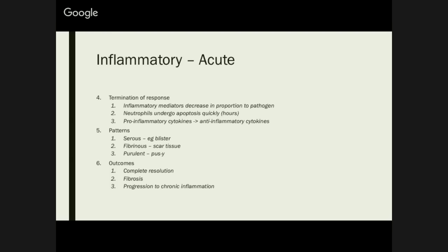There are three general patterns of inflammation outside of normal. First, serous inflammation — when inflamed tissue releases serous fluid, forming something like a blister. Your second type is fibrinous — when it essentially works to form scar tissue. You can also have purulent patterns of inflammation — that's when it generates a lot of pus. In terms of your outcomes, you can have complete resolution, or it can result in fibrosis — for example, a myocardial infarct might result in fibrosis — or it can progress to chronic inflammation.